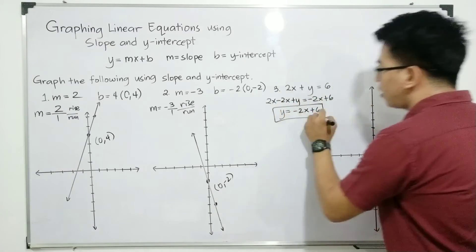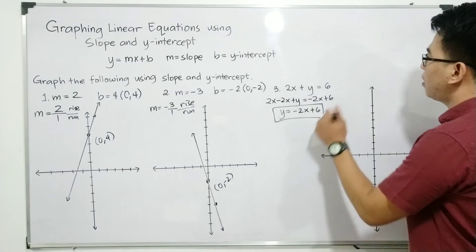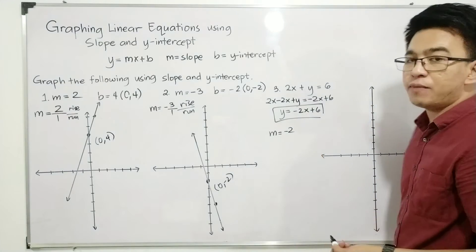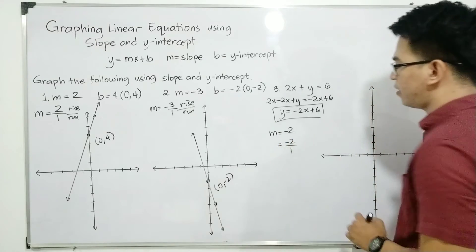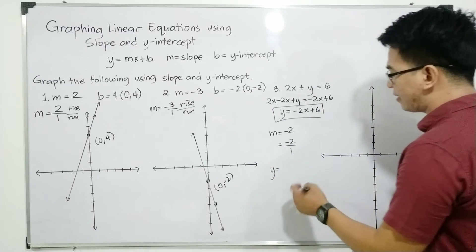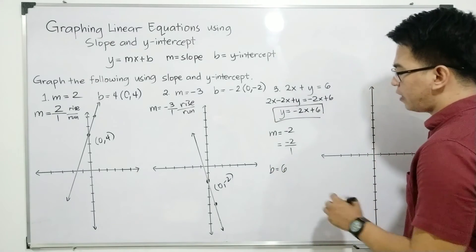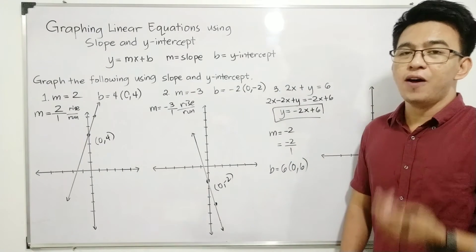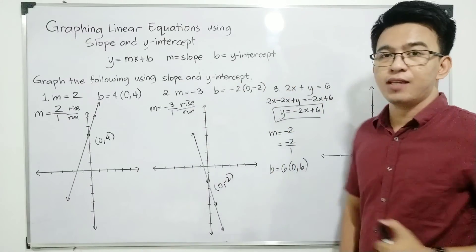As you can see, in this form we are now able to find the value of the slope and the y-intercept. The slope is equal to negative 2, which when transformed into rise over run is equivalent to negative 2 over 1. As for the y-intercept, your y-intercept is 6, so the coordinates are (0, 6). I hope you got the pattern on how to find the slope simply by transforming the equation into slope-intercept form.